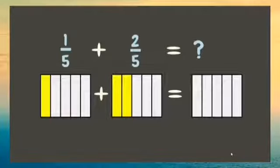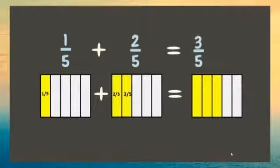Let us count the number of parts taken in all. Therefore, there are three parts taken out of five equal parts. That makes three out of five, or three-fifths. That was so easy, right?